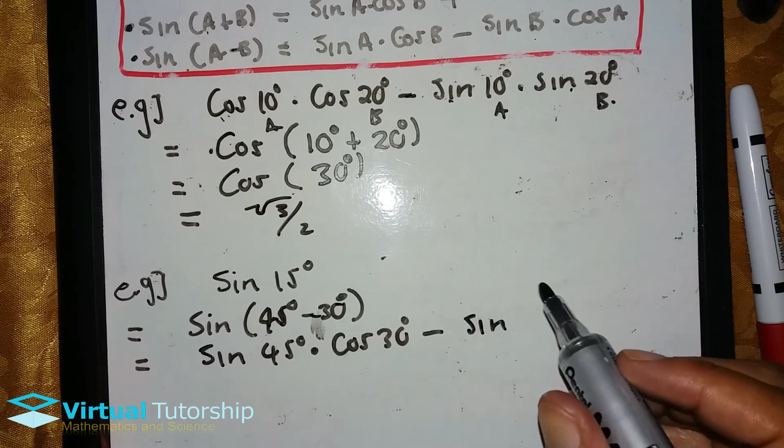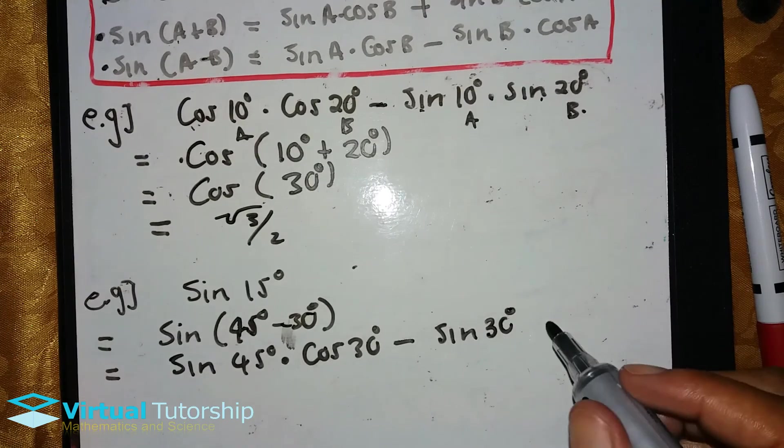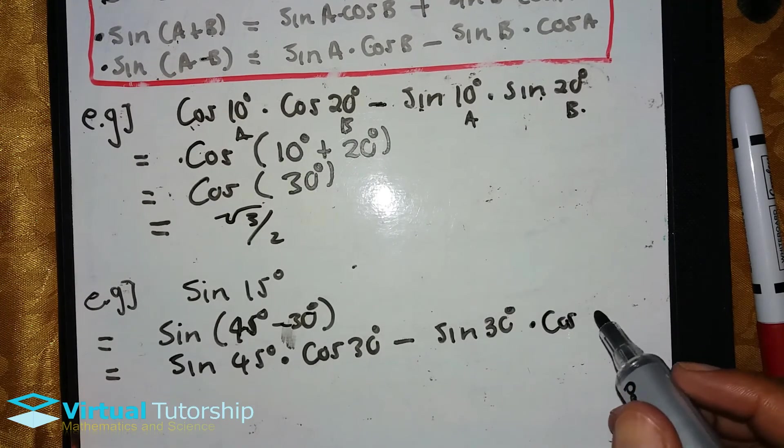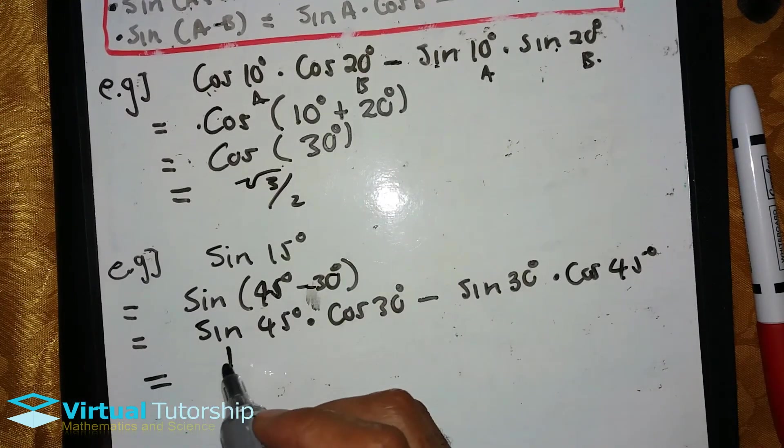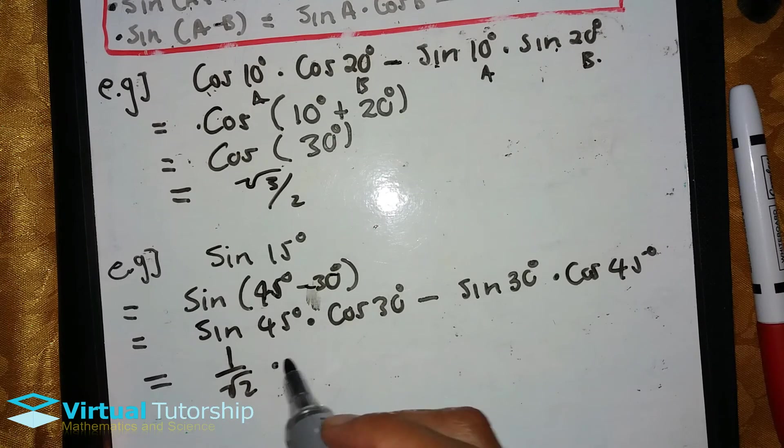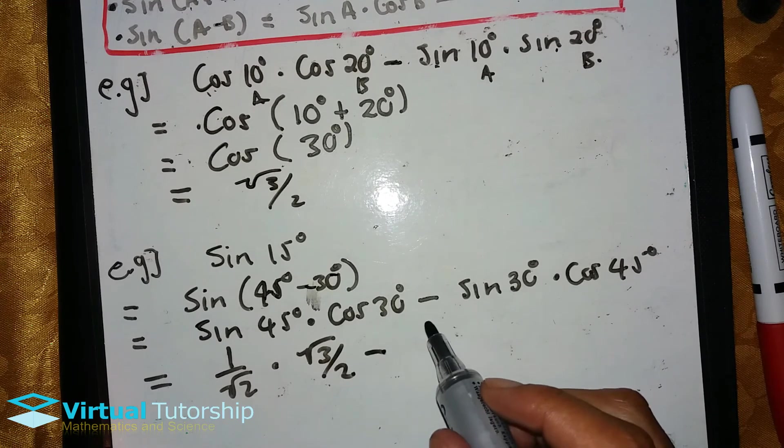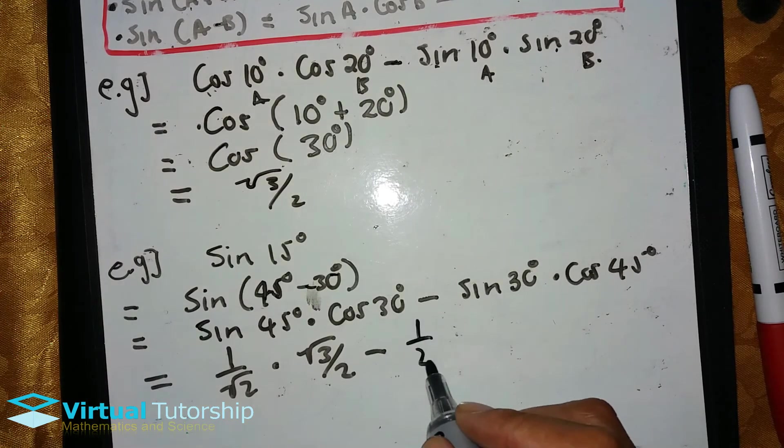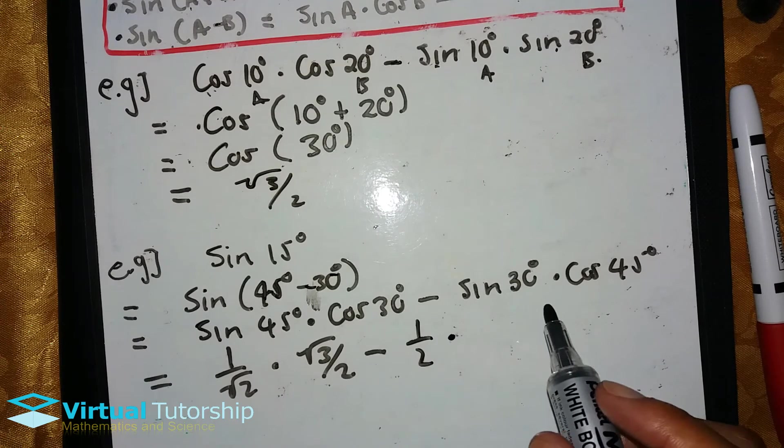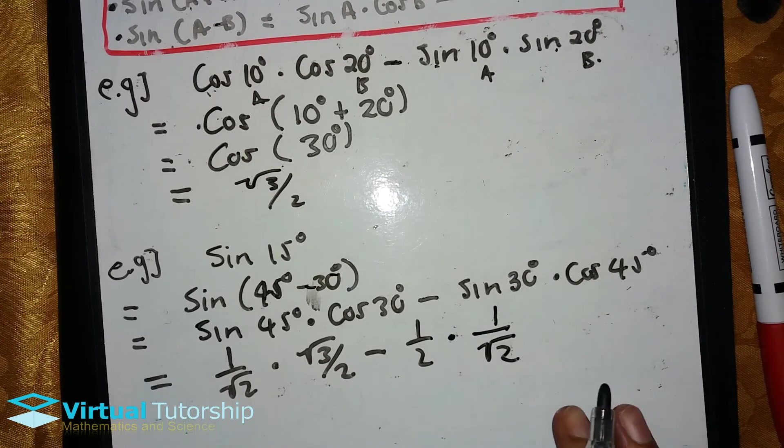Minus sine B, which is 30 degrees, times cosine A, which is 45 degrees. So this is equal to 1 over square root 2 times cosine 30 degrees, which is square root of 3 over 2, minus sine 30 degrees, which is a half, times cosine 45, which is 1 over square root of 2.